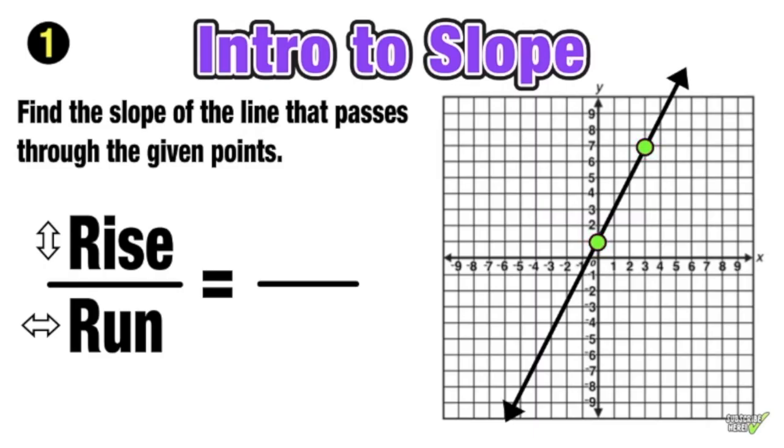Slope is rise over run, so we want to find the rise over run between those two points. Let's build our staircase. This line has a positive slope, so I'm going to rise up a certain number of units and then run over to the right to get from point to point. My rise is 6 and my run is 3.